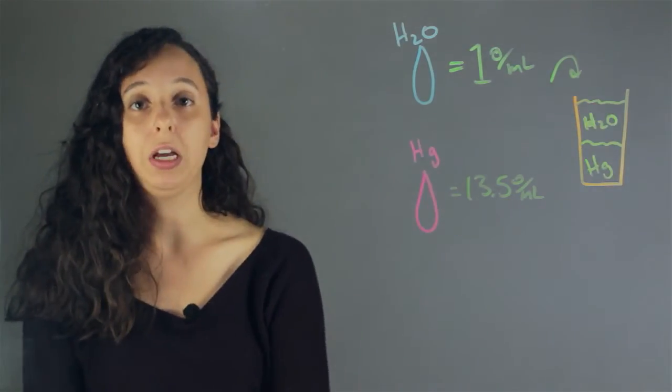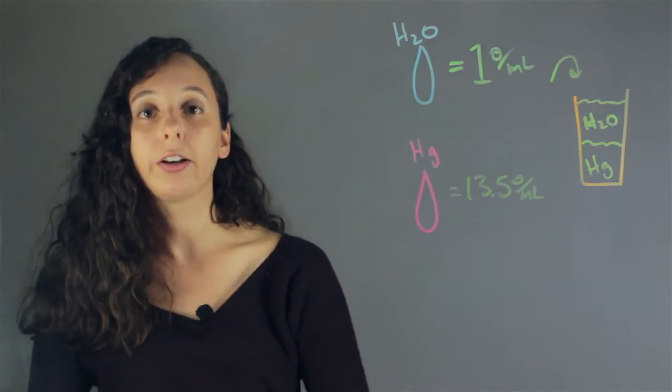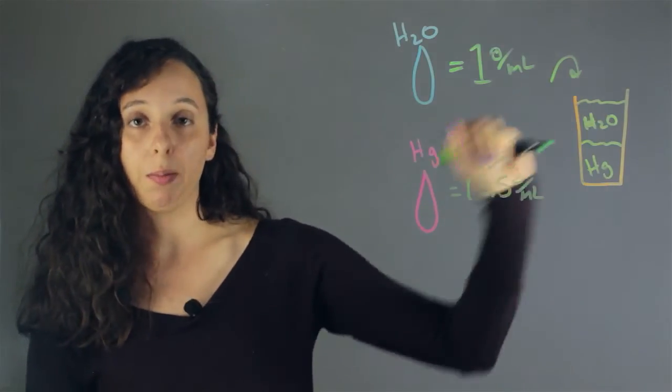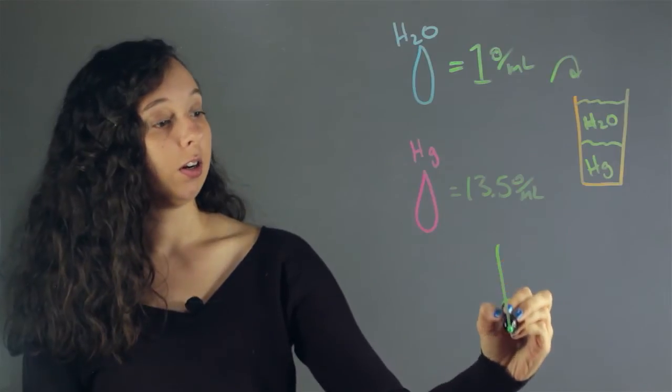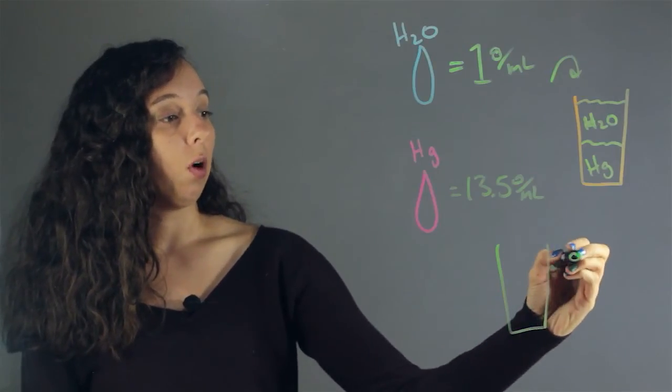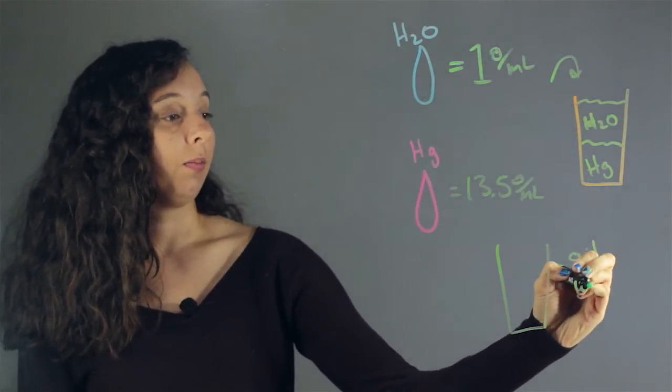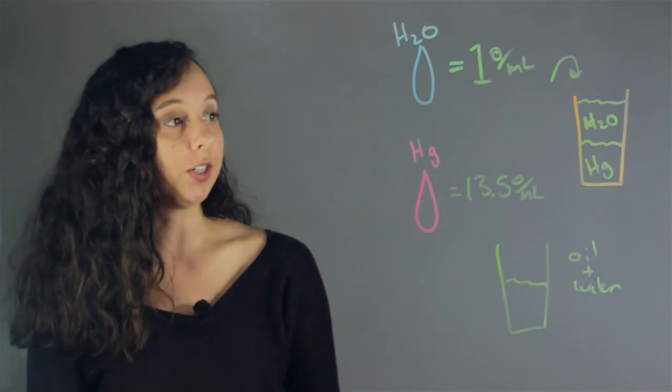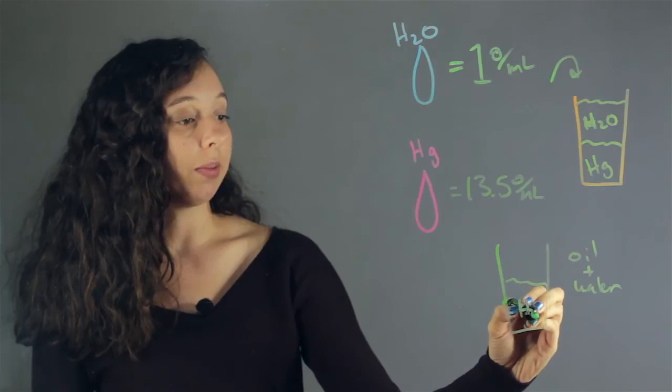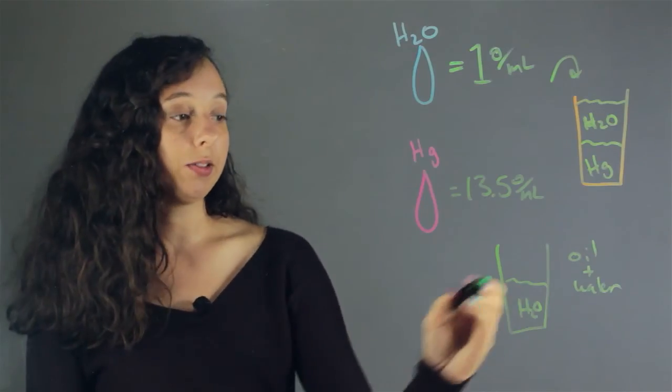So density is really the only property that affects what liquid is going to be found at the bottom of the cup versus the top of the cup. And this is very similar to another density experiment we can do, where if we added oil and water, you'd have two layers. But this time, H2O would be on the bottom because water is much more dense than oil.